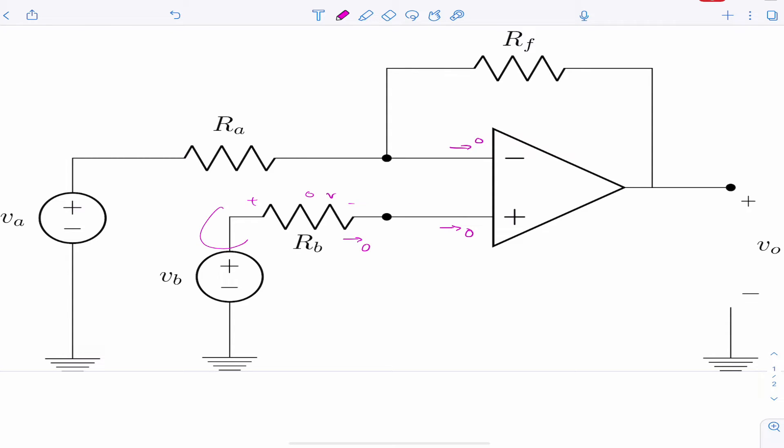That means if this node is at voltage Vb, well, this node has to be at voltage Vb. And because of the virtual short, this node has to be at voltage Vb.